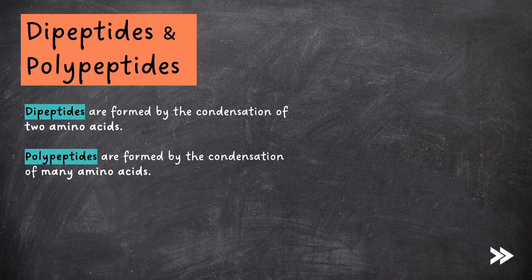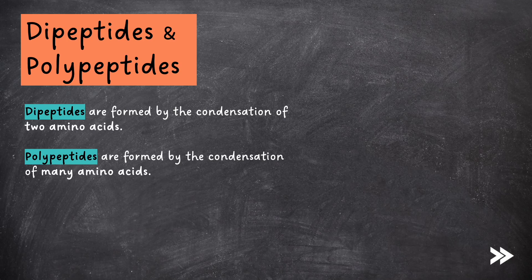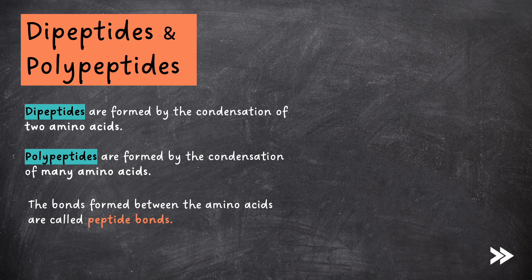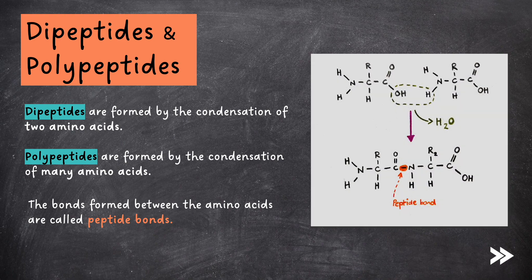To recap condensation reactions, just follow the link to my video on monomers and polymers top right. The bonds formed between amino acids are called peptide bonds. So, let's have a look at this on a diagram.